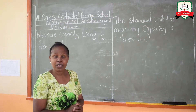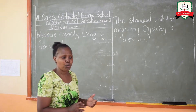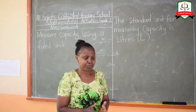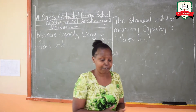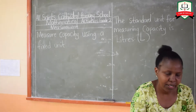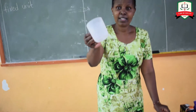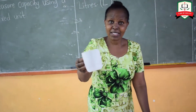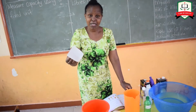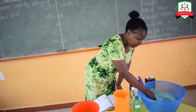Now boys and girls, today we are going to learn about capacity. I have given you an assignment on measuring capacity using fixed units. We can measure the capacity of a container using a cup. A cup is a fixed unit. So let me show how many cups will fill my jug — let's count together.